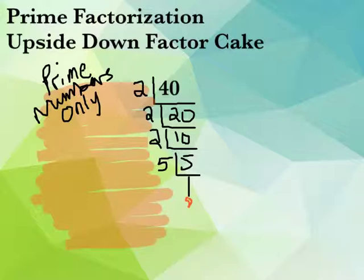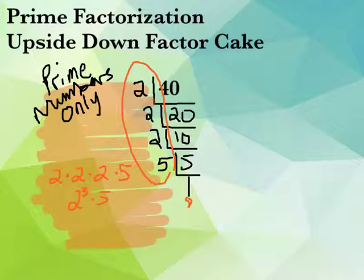If you turn your head, it looks like it's half of a cake, but instead of being right-side up, it's upside-down. So now, just like with factor tree, we need to rewrite our prime factorization. So it would be 2 times 2 times 2 times 5, and I pulled that right from outside this cake right here. Those are all my prime factors. We can also rewrite it 2 to the 3rd times 5, just like with factor tree.